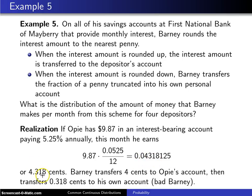So 4.318 cents rounds down to 4 cents. So 4 cents will get into Opie's account. And then here is where Barney causes some trouble, bad Barney, is he will transfer 0.318. That is the fraction of the penny is going to go to his own account.